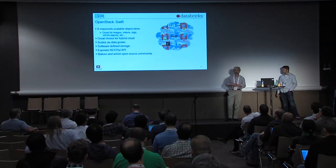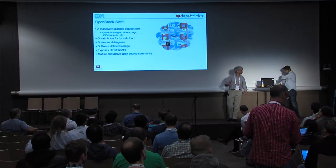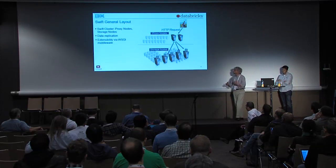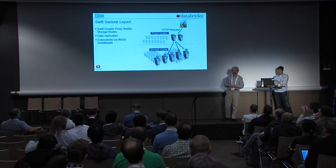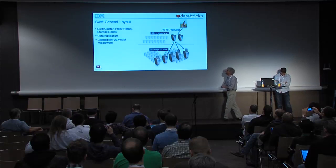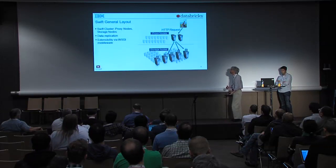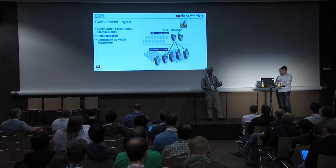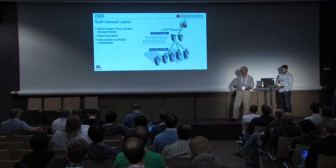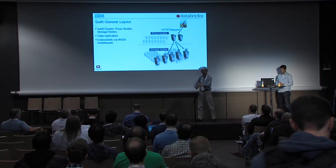Swift exports a RESTful API, meaning you access it through HTTP requests. You can do a PUT to create an object or retrieve an object. Swift has a two-tiered architecture. The externally facing tier, the proxy tier, is responsible for receiving requests and redirecting them to a node in the storage tier for actually serving the requests. Within Swift there are accounts, containers within accounts, and objects within containers, with different types of storage nodes for each.